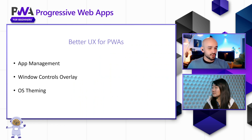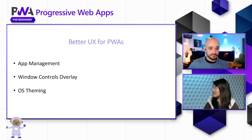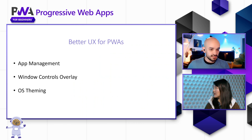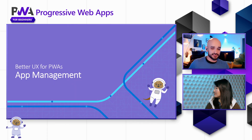We're going to talk about window controls overlay, which is a very neat feature that allows you to emulate custom title bars. And then we're going to go with OS theming, which is a standard modern practice in devices nowadays. So we're going to start with app management.